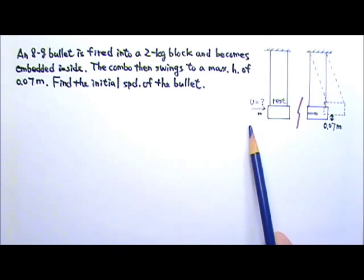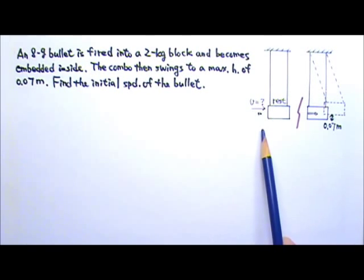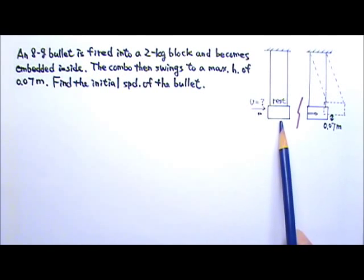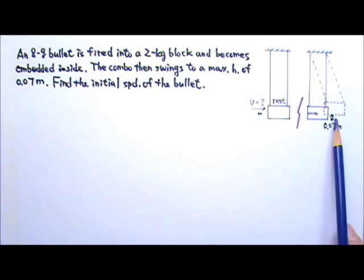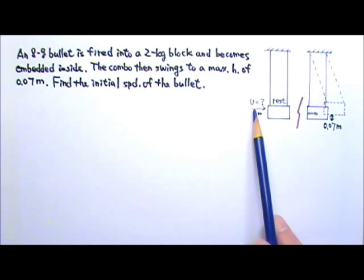In this example, I have a bullet that's 8 grams, and it is fired into a 2 kg block and becomes embedded inside the block. As a result of the collision, the combo swings up to a maximum height of 0.07 meters. Find the initial speed of the bullet.